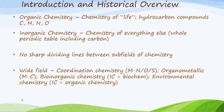We know that organic chemistry is the chemistry of life and consists mostly of hydrocarbon compounds, while inorganic chemistry is the chemistry of everything else — the whole periodic table, including carbon. There are no sharp dividing lines between the subfields of chemistry and many of the fields overlap completely.